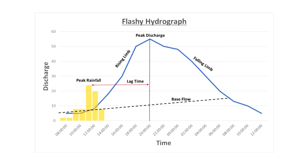Following this peak, the amount of discharge — shown by the blue line — increases. This is referred to as the rising limb. The peak discharge of 55 cumecs occurs around 9 o'clock in the evening.